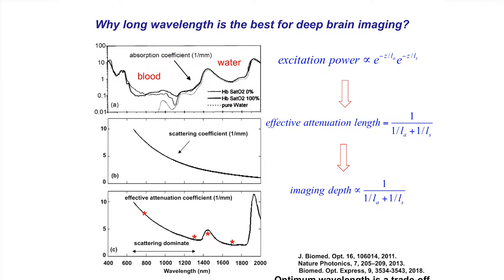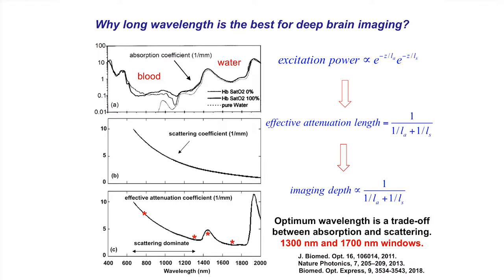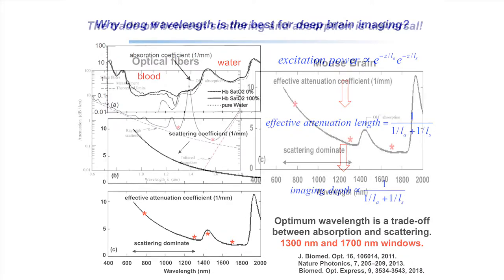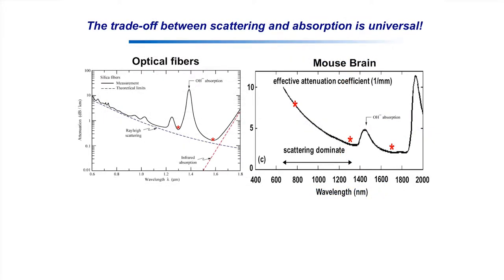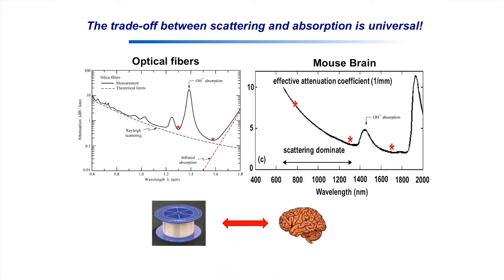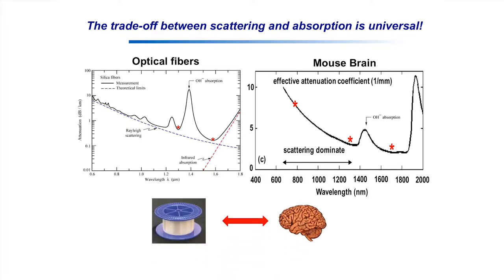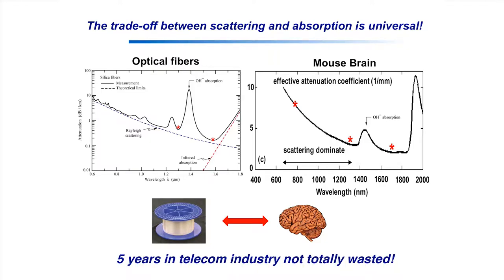This trade-off between absorption and scattering is actually quite universal. Having spent five years in telecom working on fiber optic transmission, the optical fiber attenuation curve looks remarkably similar: too short a wavelength gives too much scattering, too long gives too much absorption, and the best window is about 1.55 microns. The brain and fiber are really quite equivalent in this regard, so my five years in telecom weren't completely wasted.